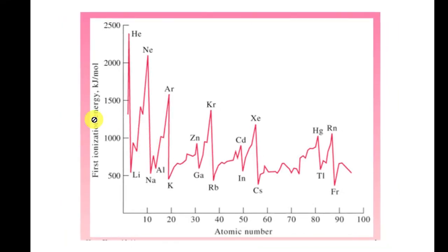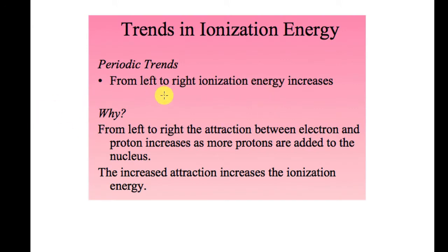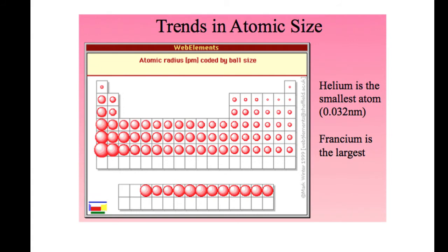Now let's look at ionization energy. Looking at the data — atomic number on the x-axis and ionization energy on the y-axis — hydrogen is at the bottom and helium is at the top going across a period. Going down from helium to neon, ionization energy decreases. The data shows a zigzagging pattern rather than a straight line, because of quantum mechanics. From left to right across a period, ionization energy increases because the nucleus has a better ability to pull the electrons.